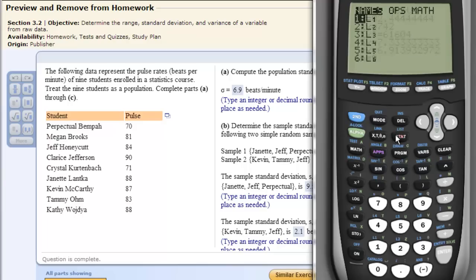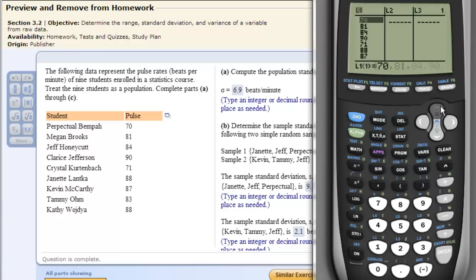We go back to STAT, Edit, and I'm going to clear this out. Enter, put our numbers in there: 70, Jeanette, 88, and Jeff, 84.